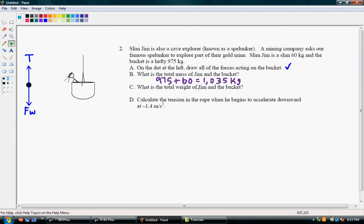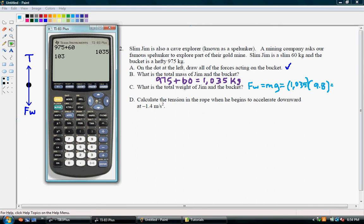Now, what is the total weight of Jim and the bucket? Well, the force of weight is mass times gravity. So that is going to be equal to the mass is 1,035, and gravity is 9.8. And when we multiply those together, 1,035 times 9.8, we get 10,143 Newtons downward.